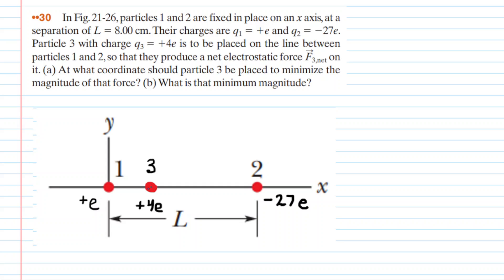The reason for that is because we're trying to minimize the net force acting on this charge. We would not want to move this charge too close to charge 2 because charge 2 has an overall charge of negative 27e, which is much greater than the charge on charge 1, which is only positive 1e.